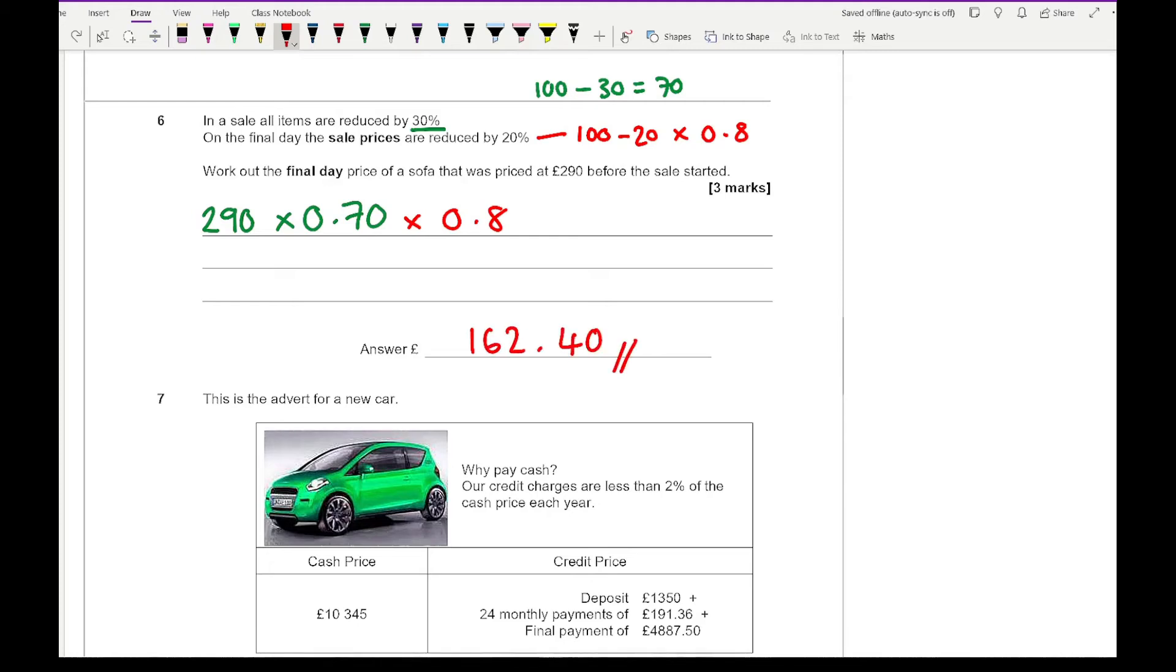If you did it another way and still came up with £162.40, you should get all three marks. Just make sure you are showing clear working out.